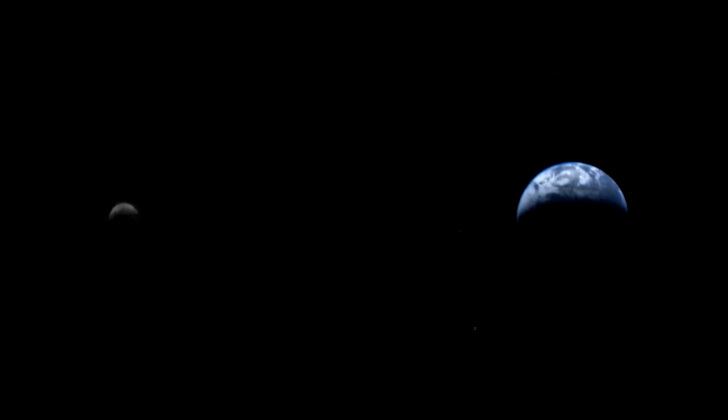In 1990, Voyager 1 took its iconic pale blue dot image, capturing Earth as a tiny speck in the vastness of space from 3.7 billion miles away. This image, taken at the request of Carl Sagan, highlighted the fragility and smallness of our planet, evoking a profound sense of humility and perspective on our place in the universe.